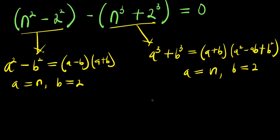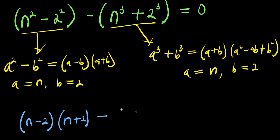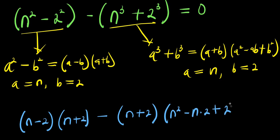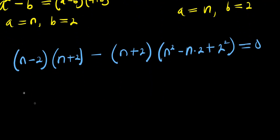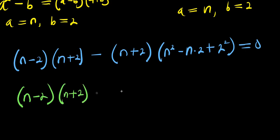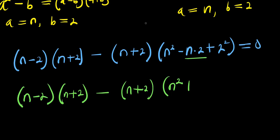So we are making use of that. Now let's set them here: we have (n minus 2)(n plus 2) minus (n plus 2)(n squared minus 2n plus 2 power 2) equals 0. From here: (n minus 2)(n plus 2) minus (n plus 2)(n squared minus 2n plus 4) equals 0.